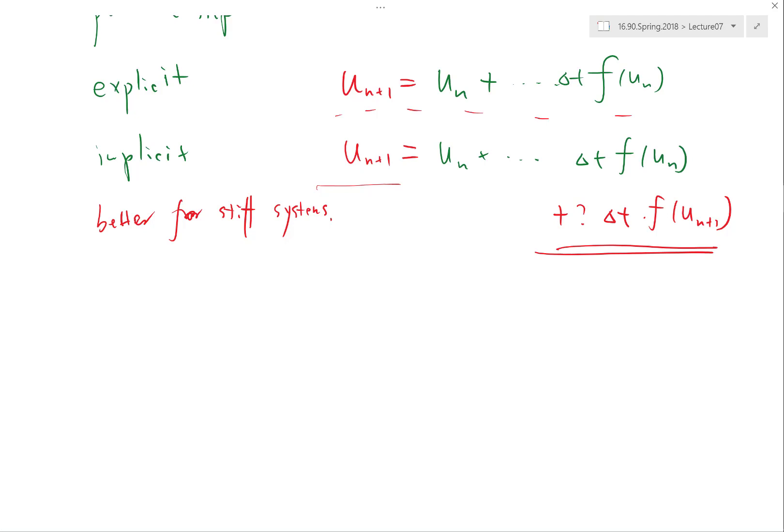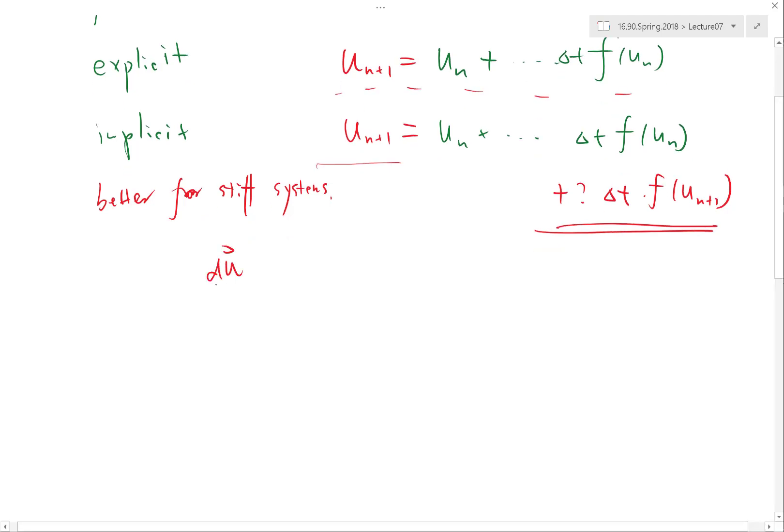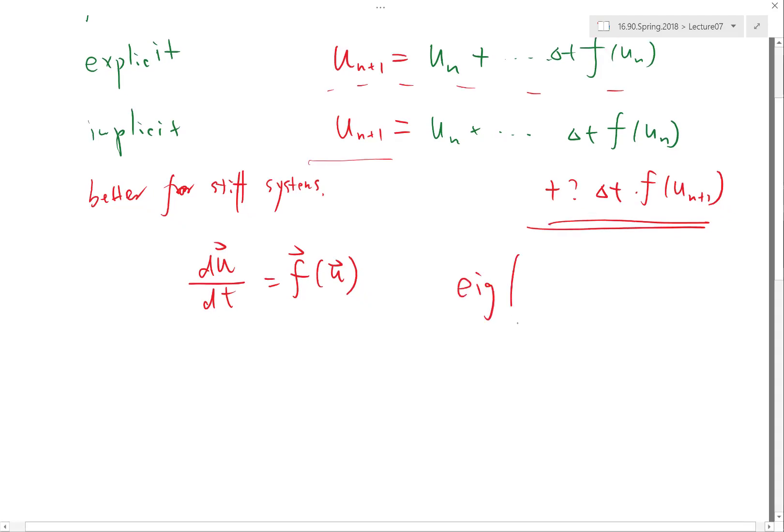So if it's a nonlinear system, where do you get the A matrix? You have to linearize, yes. Compute ∂f/∂u. So if you have du/dt as a vector equal to f as a vector function of u as a vector, that's a system of potentially nonlinear equations. You want to compute the eigenvalue of ∂f/∂u. If that matrix gives you very different eigenvalues—by very different I mean order of magnitude different—then you have a stiff system.